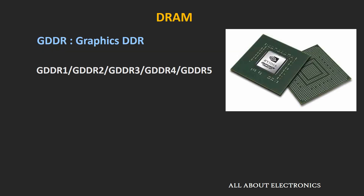The RAMs used for graphics cards are known as Graphic DDR or GDDR. Since these are used for multimedia applications, the amount of data to be handled is much greater, so GDDR RAMs have higher bandwidth compared to desktop and laptop memories.